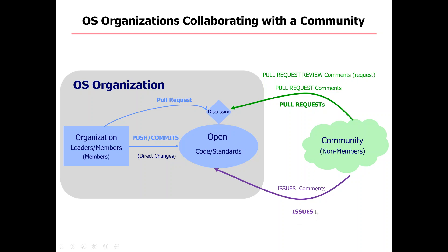When it goes external, it works similarly. The community raises a problem — that problem normally triggers comments. Someone different from who raised the issue creates a change, what is called a pull request. That pull request generates comments, and eventually someone provides a review and it is submitted for discussion. If the organization considers that the suggested changes make sense, they are merged into the code, and the organization can benefit from this.